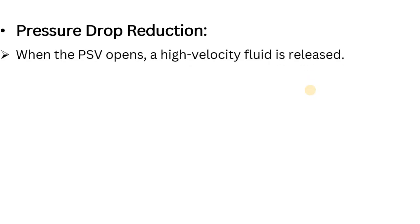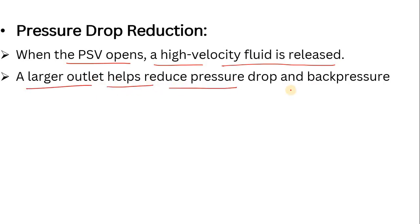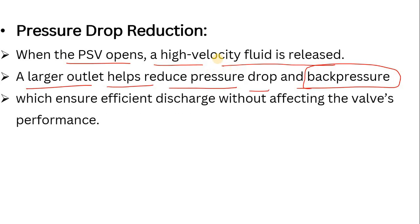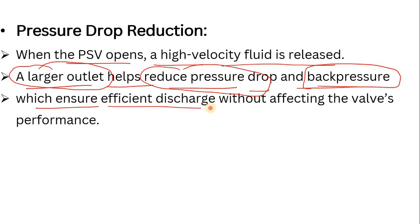One more point is pressure drop reduction. When the PSV opens or pops up, a high-velocity fluid is released. A larger outlet helps reduce pressure drop and back pressure. If the pressure drop delta-P is too high, the fluid will not go to the destination. If you select a larger outlet, it will definitely help reduce the pressure drop, ensuring efficient discharge without affecting the valve's performance.